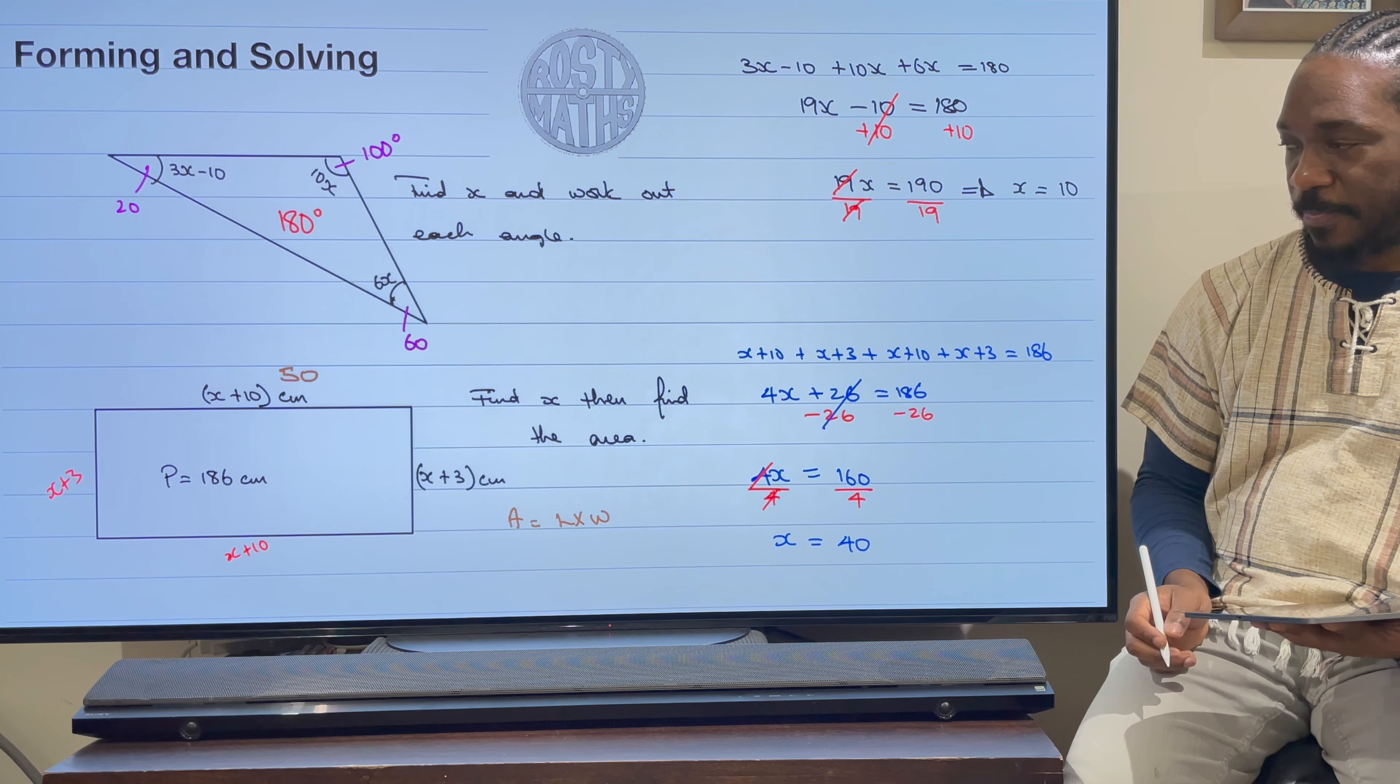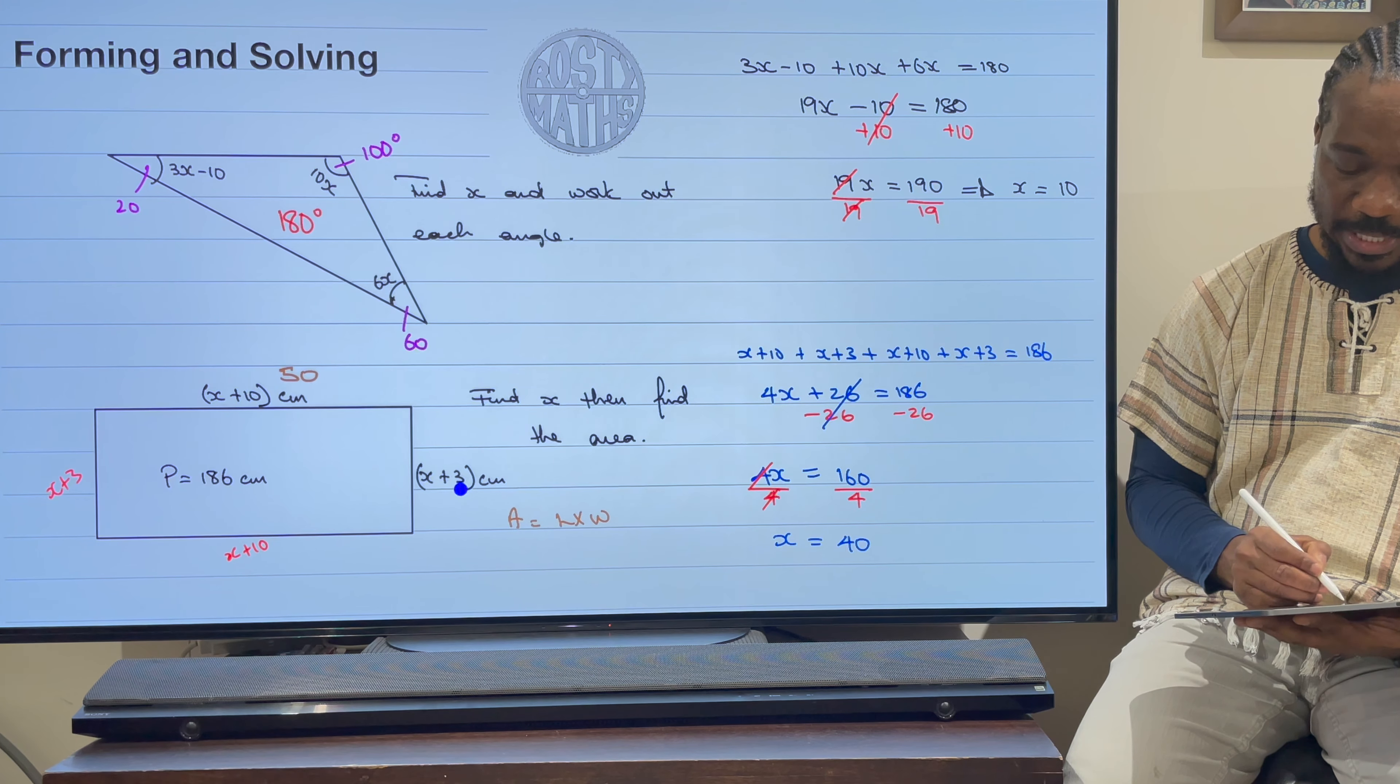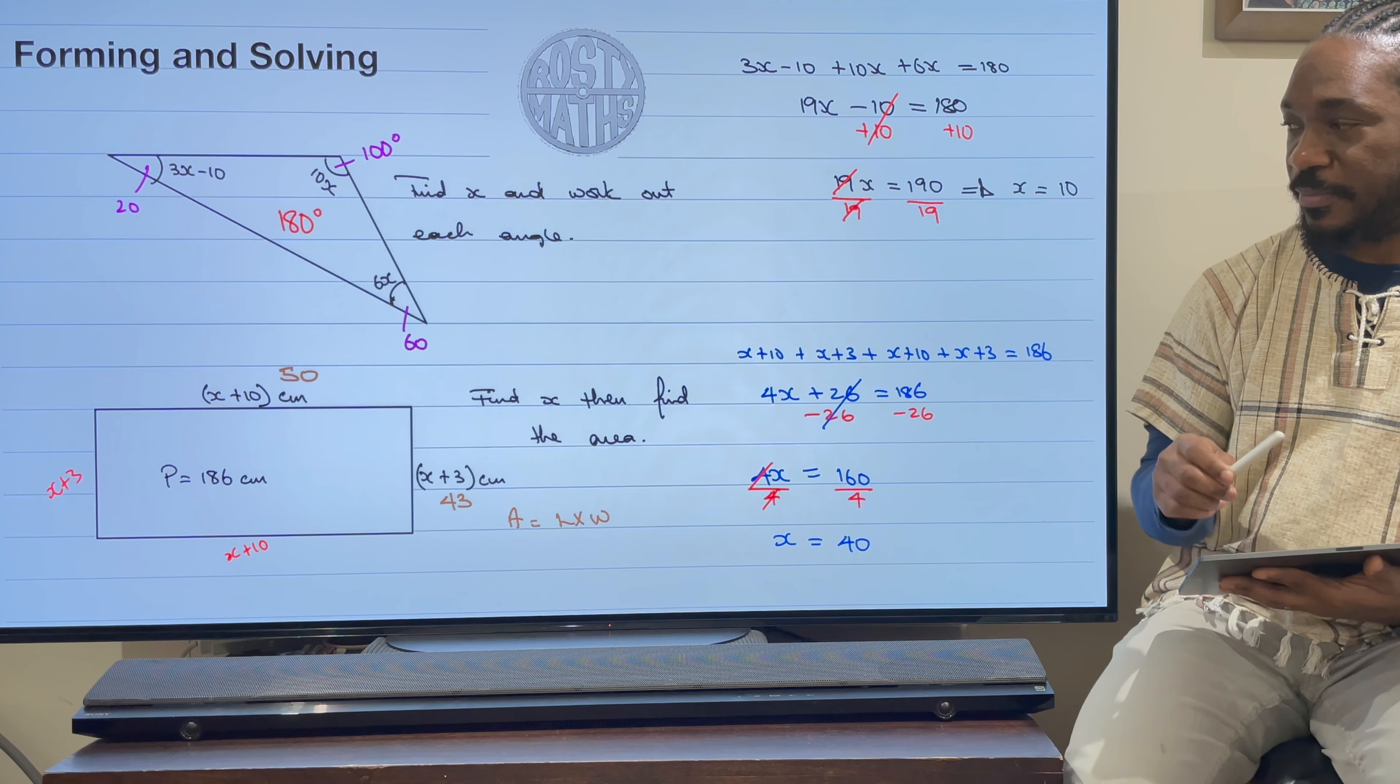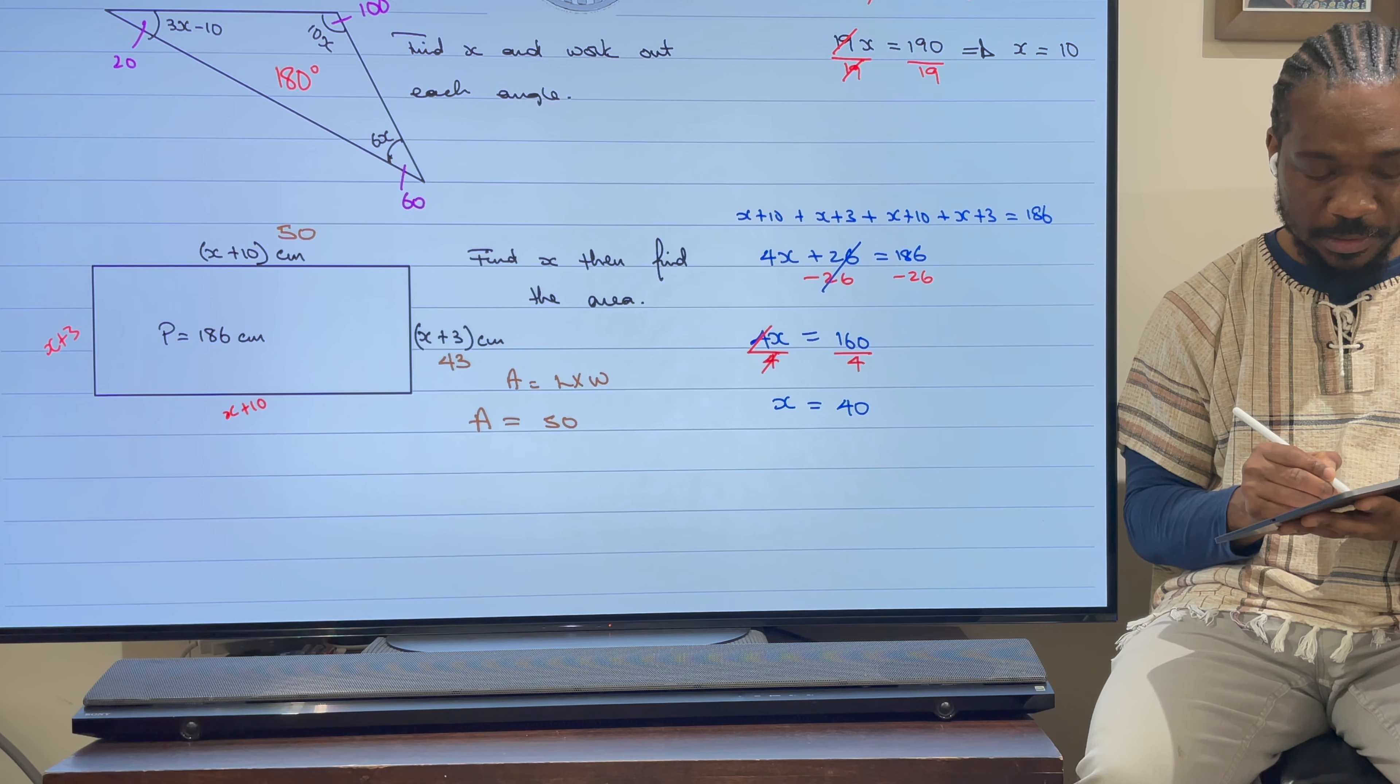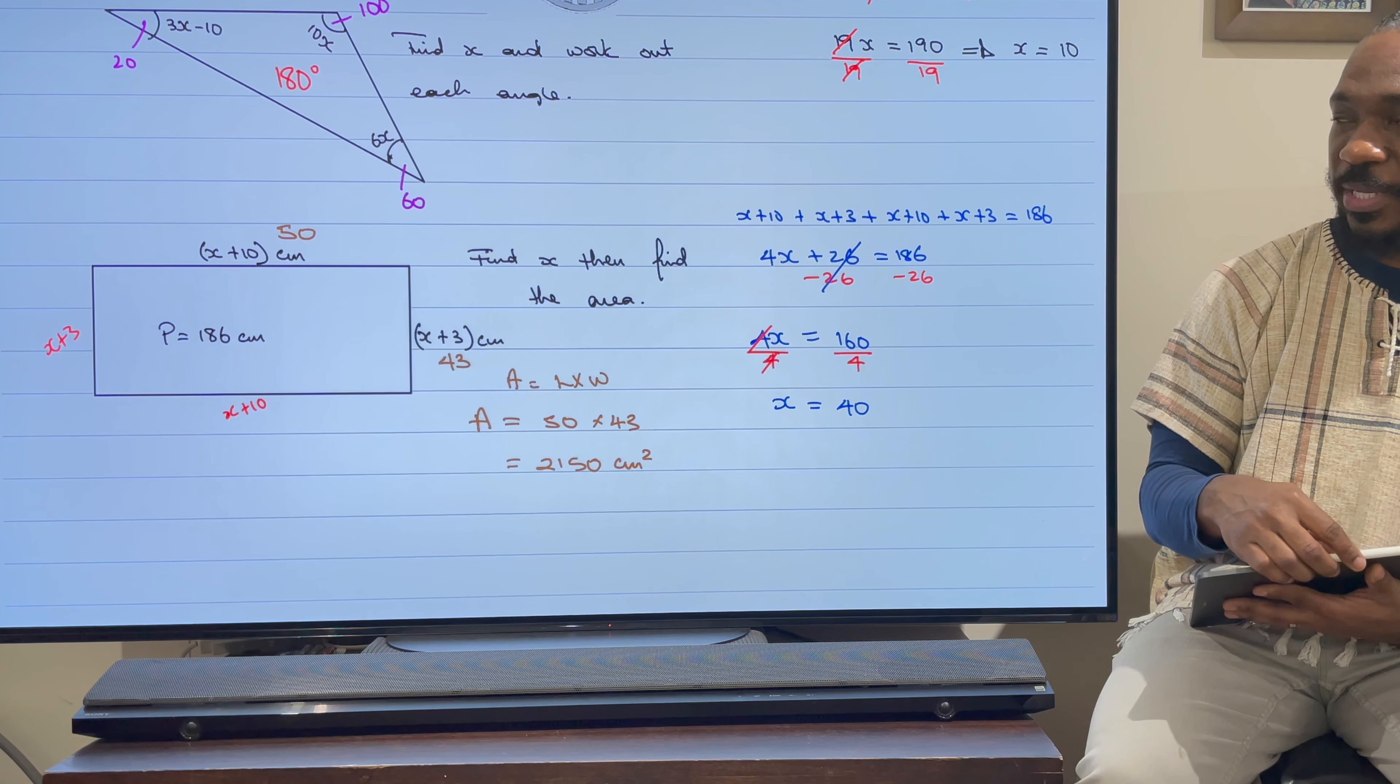And then down the bottom here, the width is x add 3, so 40 add 3, that's going to be 43. So therefore the area is equal to 50 times 43, which is 2150 centimeter squared. And just like that, we have formed and solved that equation.